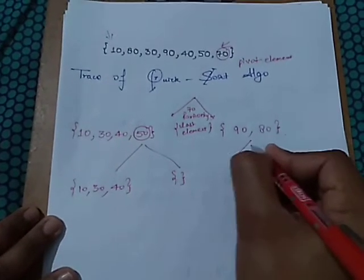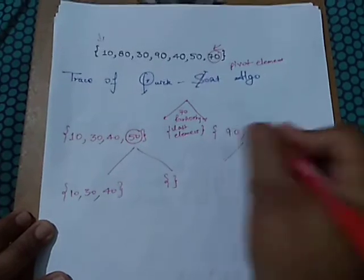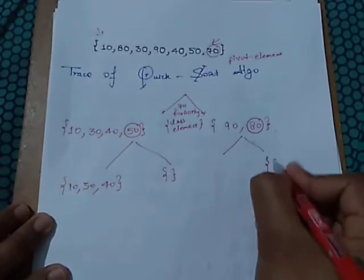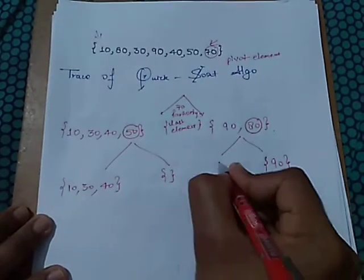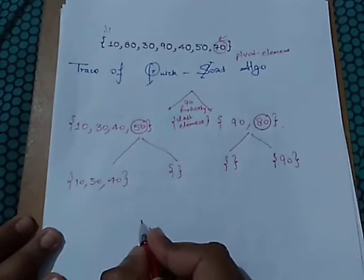On the left-hand side, 80 is taken as the pivot element. So 90 is greater than 80, and on the left-hand side the array is empty.